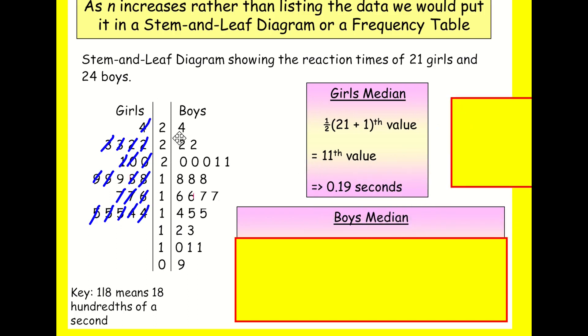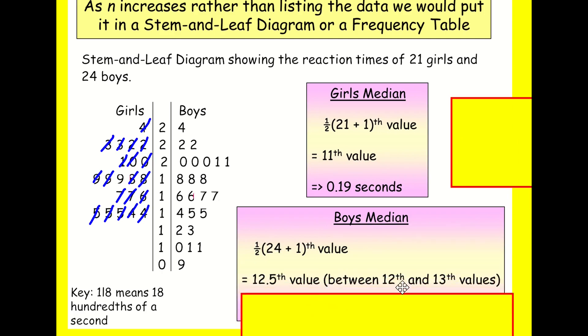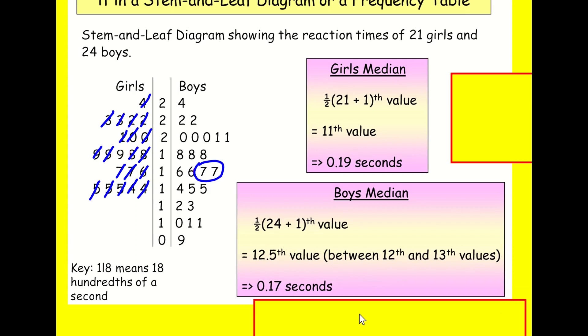For the boys, it's going to be similar. We can cross them off if we like. I'm going to go straight to this other approach. 24 plus one divided by two. That's going to be twelve and a half. So between the twelfth and the thirteenth values. If I start from the bottom, one, two, three, four, five, six, seven, eight, nine, ten, eleven, twelve. And the thirteenth. So these are the ones I'm looking at. Actually, in this case, the mean of these numbers is itself going to be seven. So I'm going to get 17. So I'm going to get 0.17 seconds.